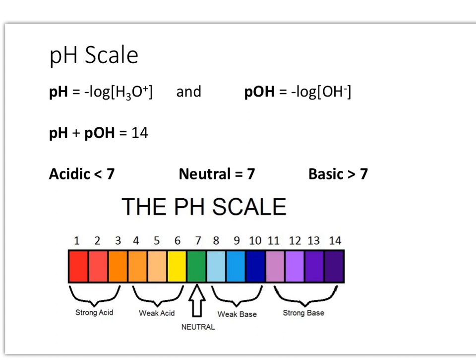Some of you may be asking: how do I get to just hydroxide or hydronium ion by itself? In order to get your hydronium ion by itself, you're going to take 10 to the negative pH value, and that will give you your hydronium ion. Similarly, if you wanted to get your hydroxide ion concentration, you're going to do 10 to the negative pOH. These four equations are all interrelated — make sure you're able to calculate each of them and know them by heart.